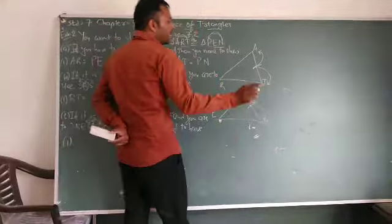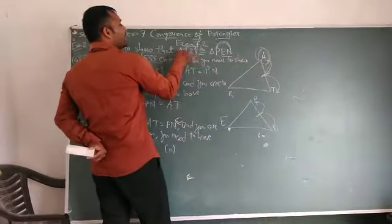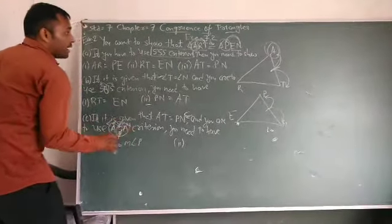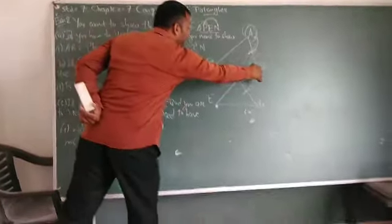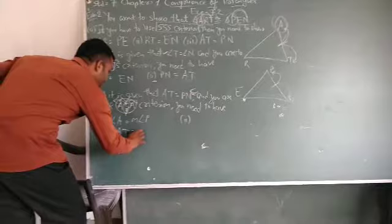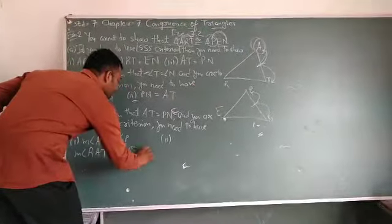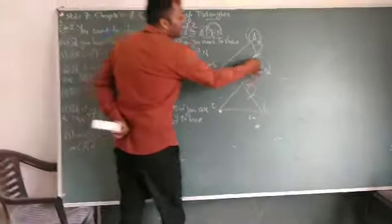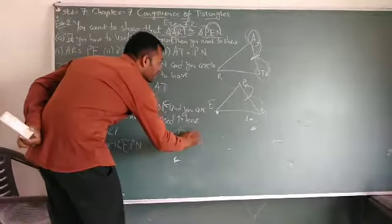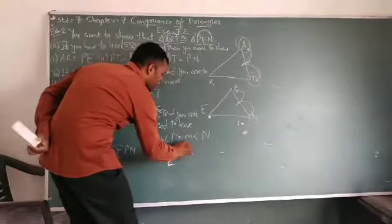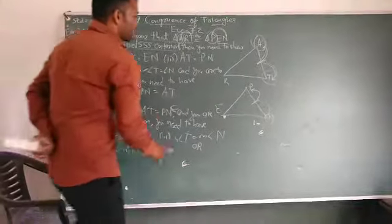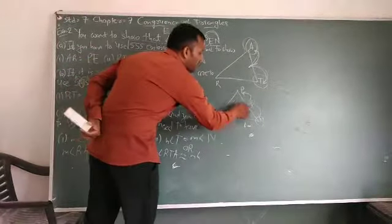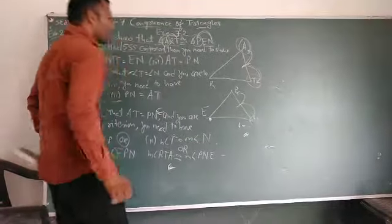This side is given, so left angle is A and right angle is T. This side is given, left angle is P and right angle is N. Angle A is equal to angle P, or measure angle RAT is equal to measure angle EPN. Second one, so right side angle is T. Measure angle T is equal to measure angle N, or measure angle RTA is equal to measure angle PEN. These are your answers.